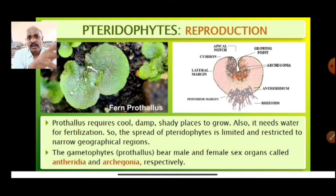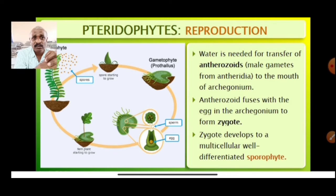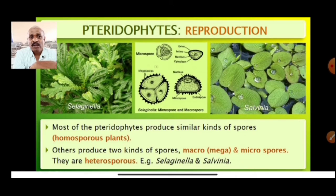The male and female sex organs are called antheridia and archegonia respectively. Antheridia is the male one and archegonia is the female one. For reproduction, water is needed for transfer of antherozoids — the male gametes — from antheridia to the mouth of archegonia. The antherozoid fuses with the egg in the archegonia to form the zygote, which then develops into a multicellular, well-differentiated sporophyte.